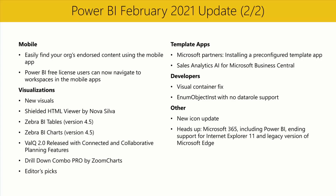This month's editor's picks are: The Individuals and Moving Range Control Chart by PQ Systems, The Acteris Variance Visual by Acteris, The Advanced Pie and Donut Chart by Xviz, and the Zebra BI Charts by Zebra BI. You can find these editor's picks and all other mentioned visuals on AppSource.